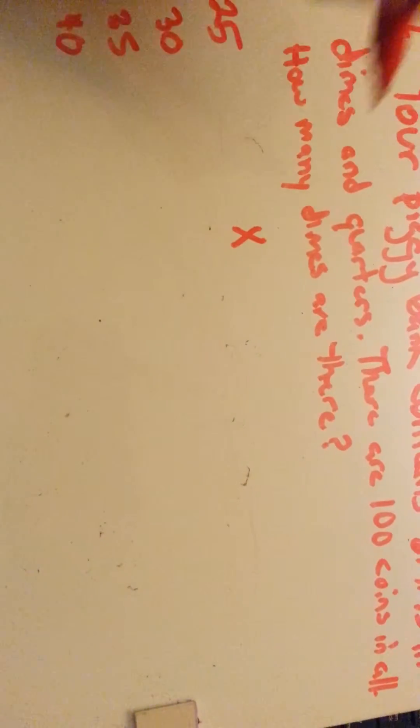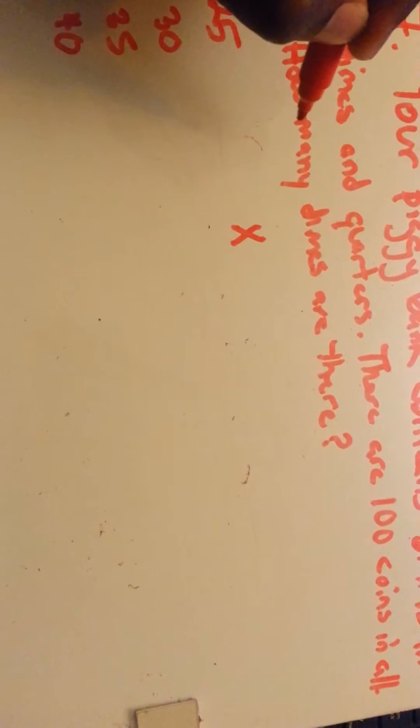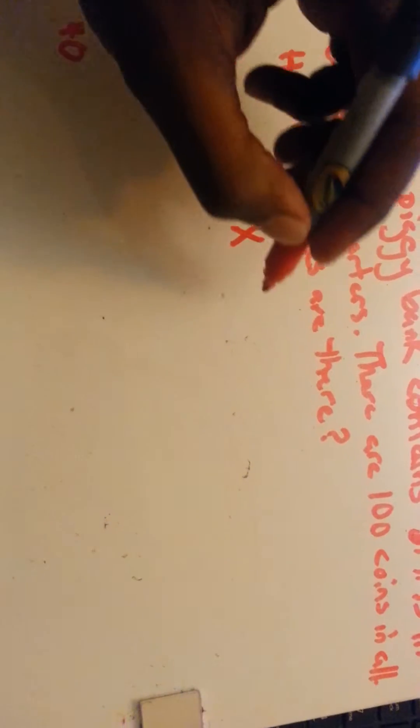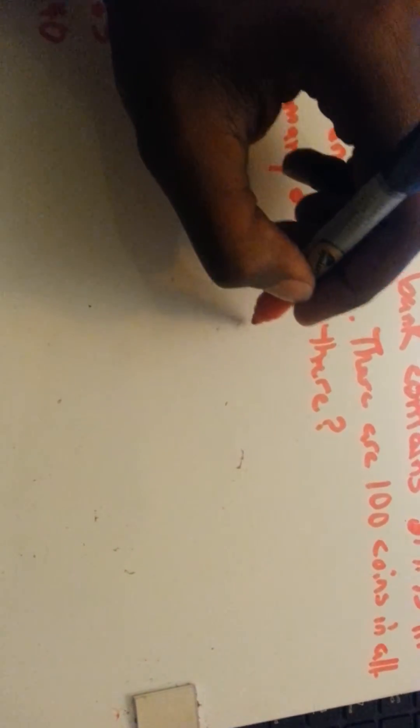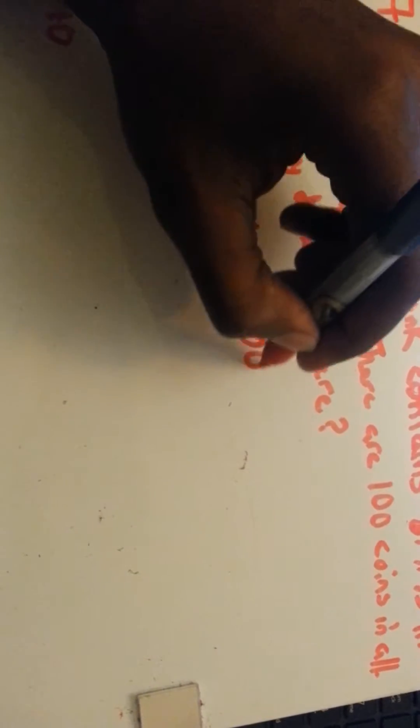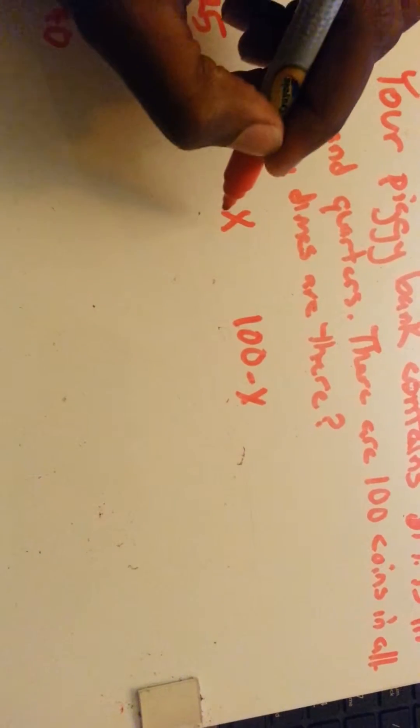So to set this up, we're going to have X is going to be our dimes as we're solving for, and we know that there are 100 total coins, so 100 minus X is going to be the quarters.